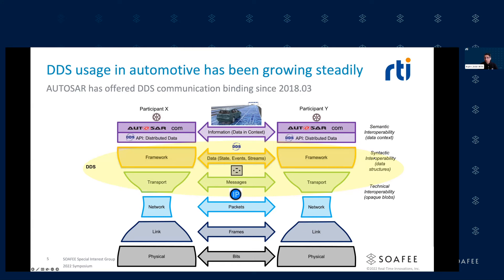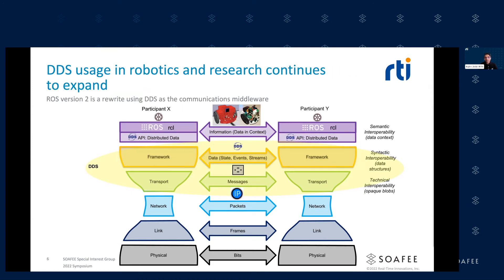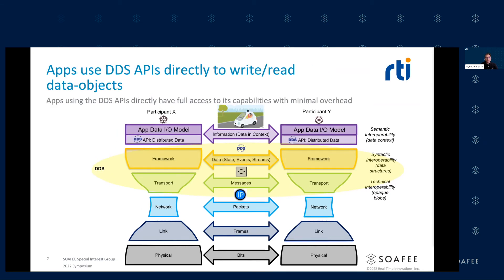DDS usage in automotive has been growing steadily. AUTOSAR has offered the DDS communication binding since the 2018 March release, defining a binding to the DDS APIs. There is now work going on to add DDS to AUTOSAR Classic so there is a full AUTOSAR ecosystem that can leverage DDS capabilities. DDS actually grew up in the robotics world — that's where its origins are — and it was adopted by ROS, so ROS 2 is a rewrite using DDS as the communication middleware. It continues to grow, as seen with Autoware, which uses ROS 2, which uses DDS underneath.